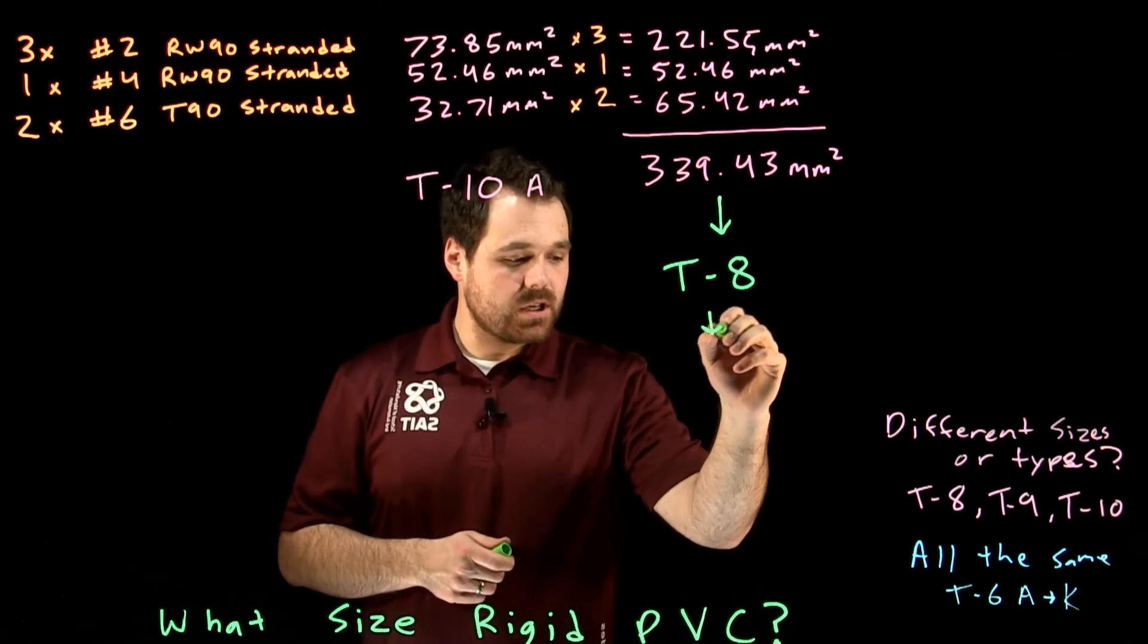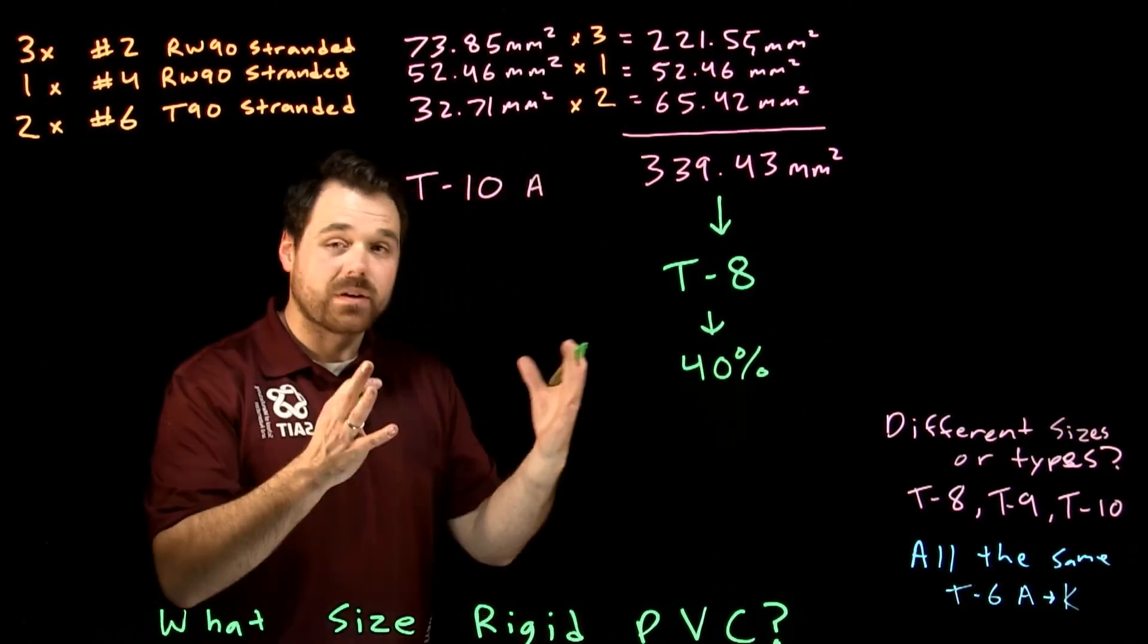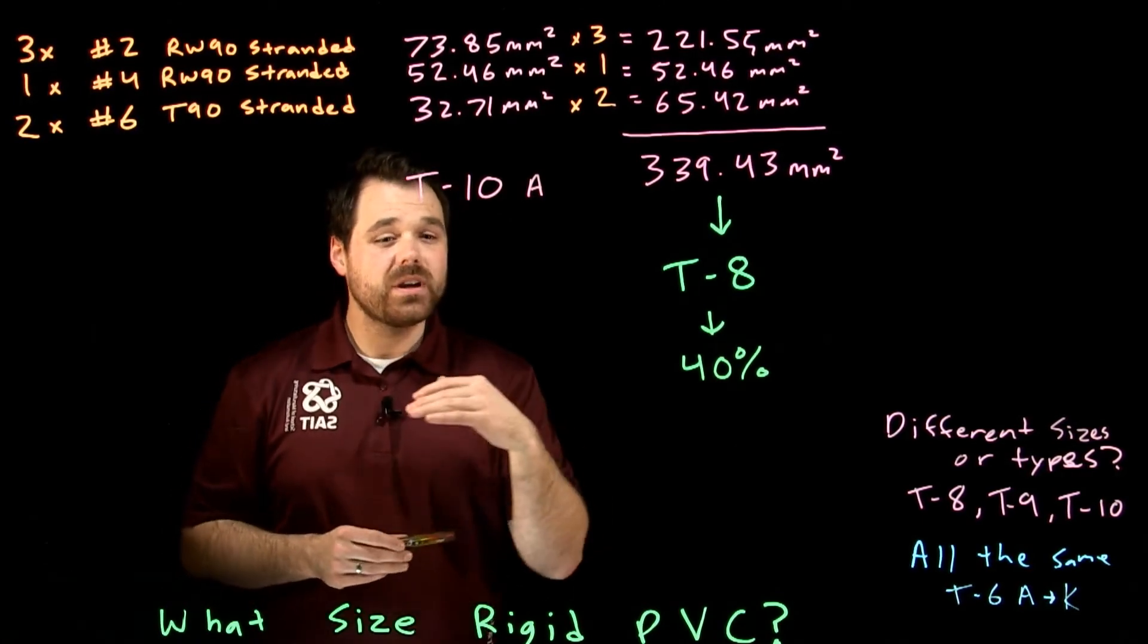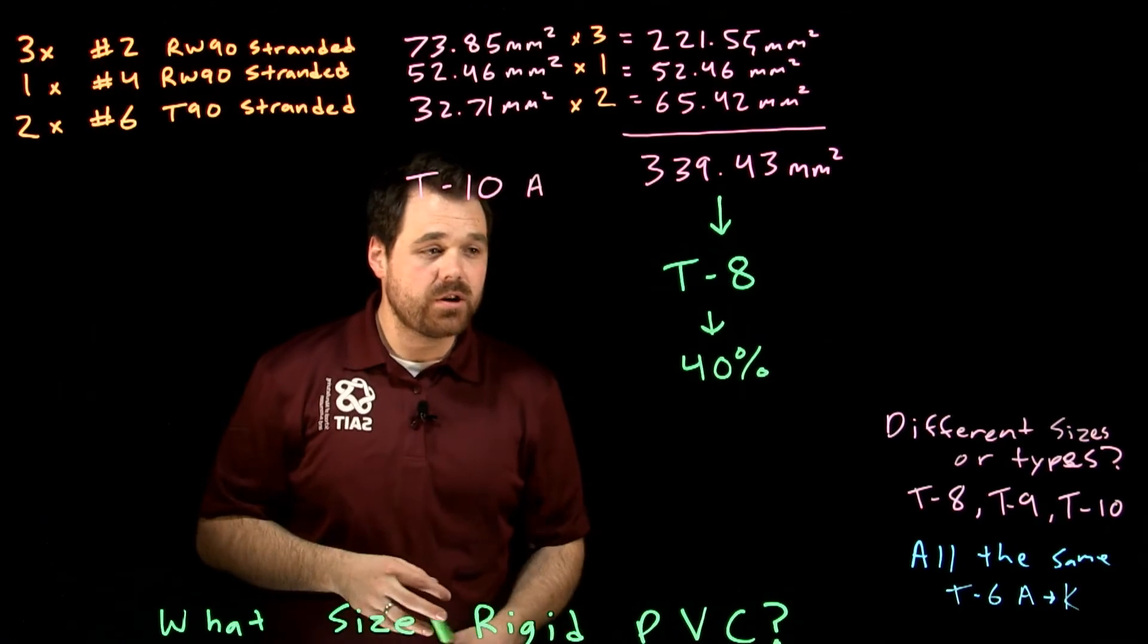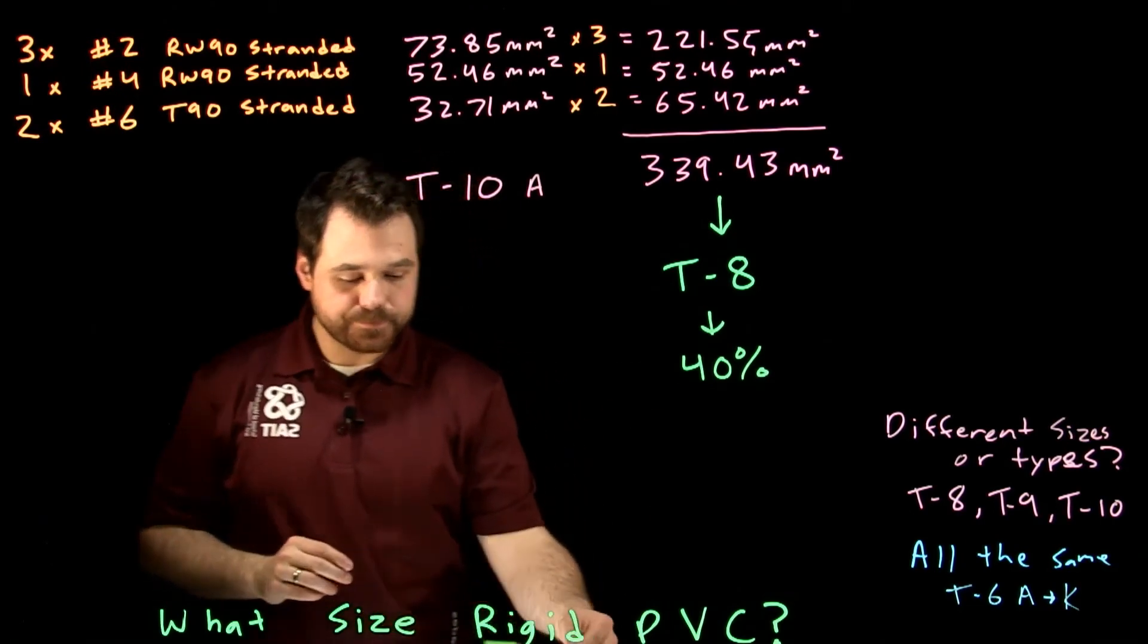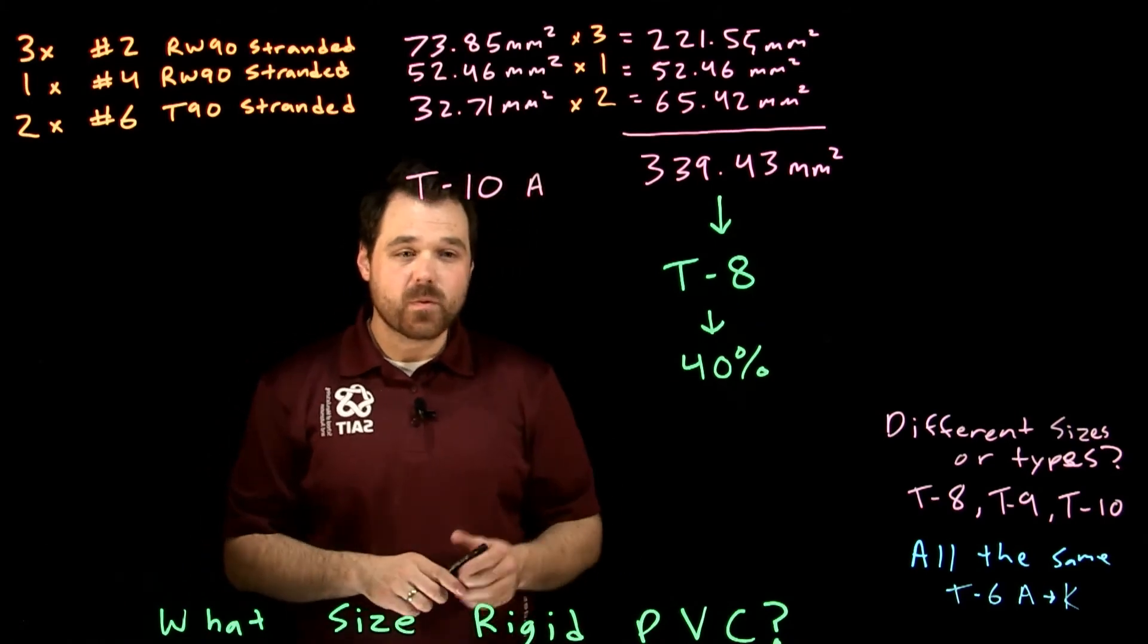So table eight, in this case, tells us we are going to use the forty percent column. Forty percent fill. We're going into the non-lead sheath and we have more than four conductors in our conduit. It tells us forty percent. Now, once we have this number, we take that forty percent.